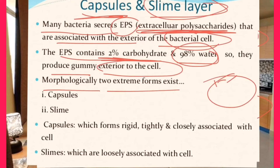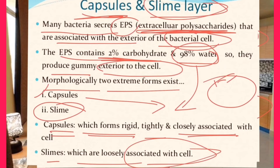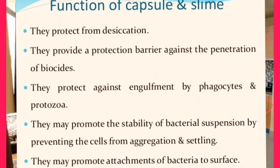Morphologically there are two extreme forms of existence: the capsule and the slime layer. When the covering is solid and hard, it is called a capsule. When it is loose and mucus-type in structure, it is called a slime layer. The capsule is rigidly and tightly associated with the cell, while the slime layer is loosely associated with the cell and can be easily removed by certain technical methods.